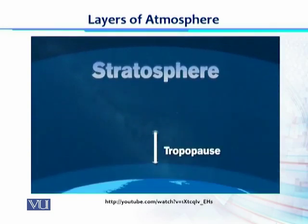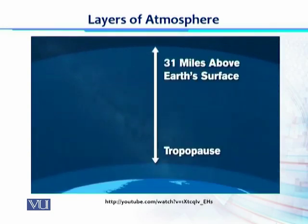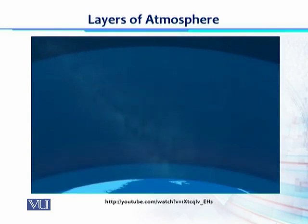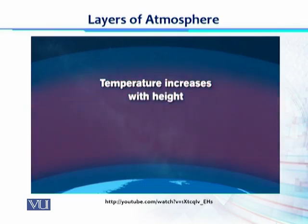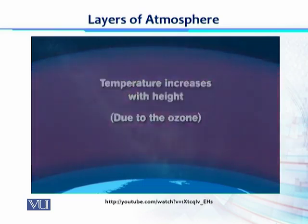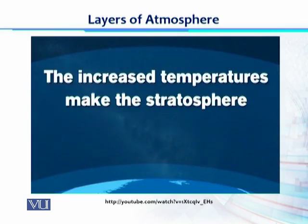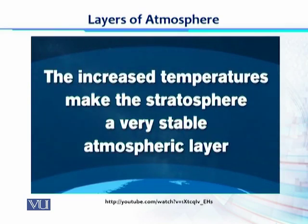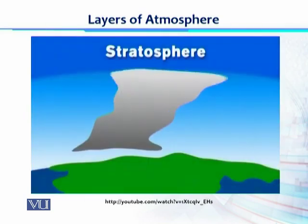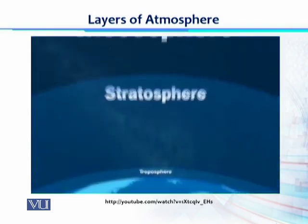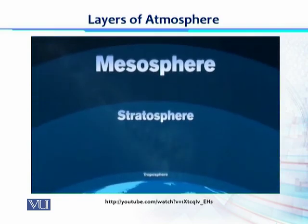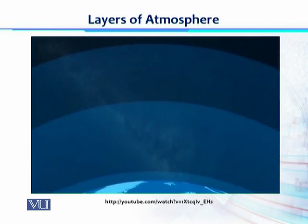The stratosphere extends from the tropopause up to about 31 miles above the Earth's surface. In this layer, temperature increases with height due to the presence of ozone. The increased temperatures make the stratosphere a very stable atmospheric layer and give thunderstorms their famous anvil-shaped tops.